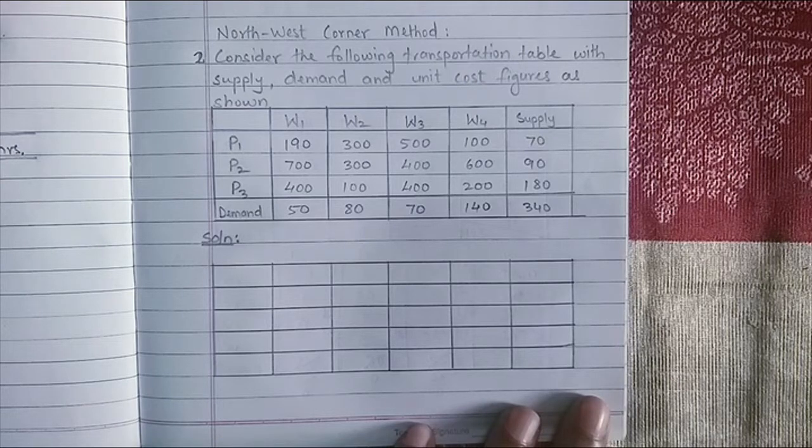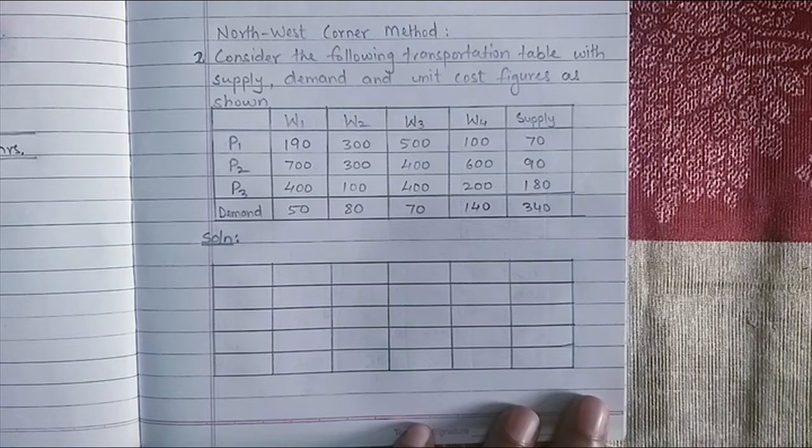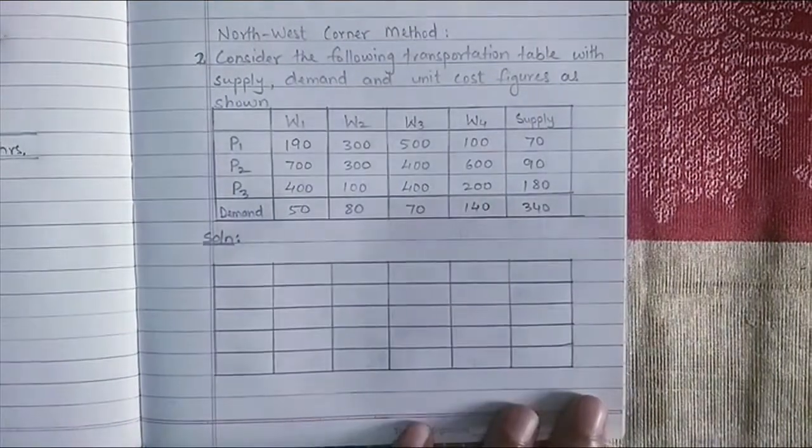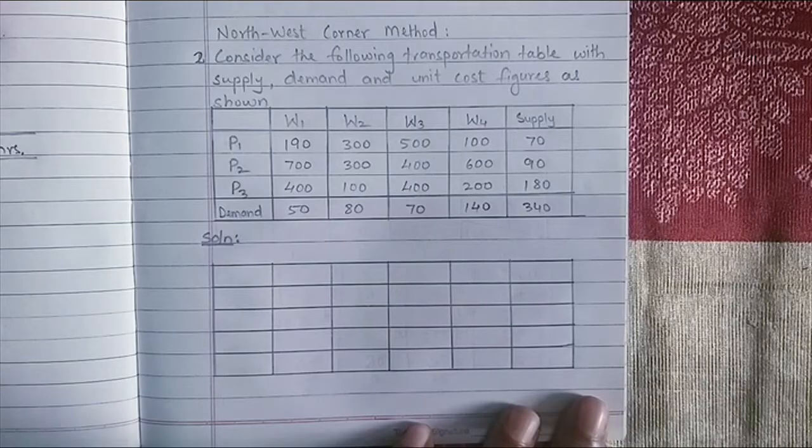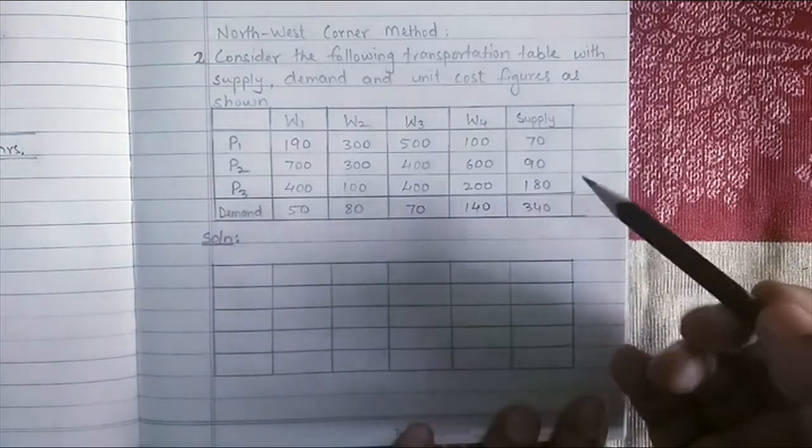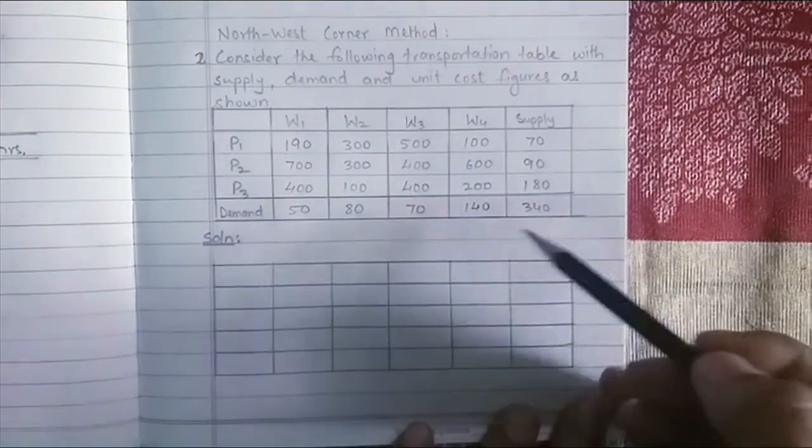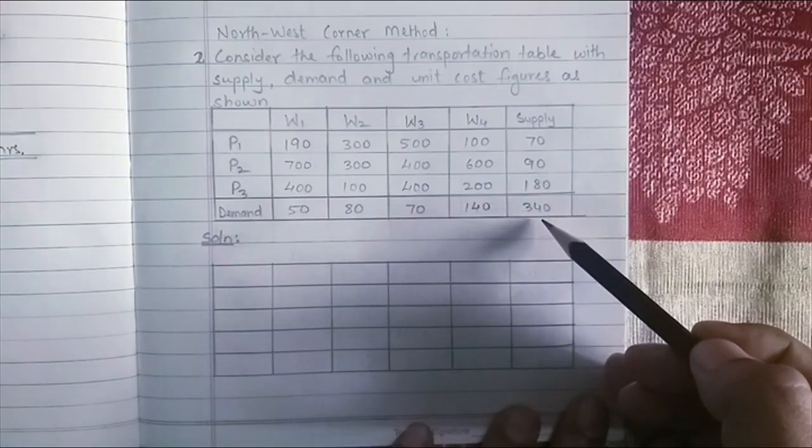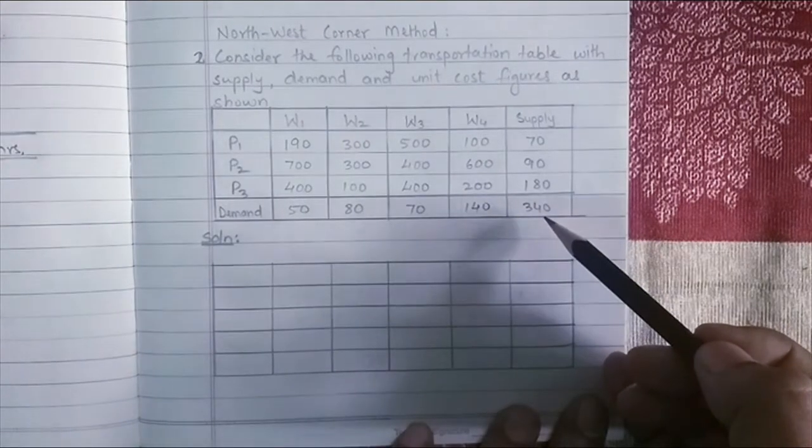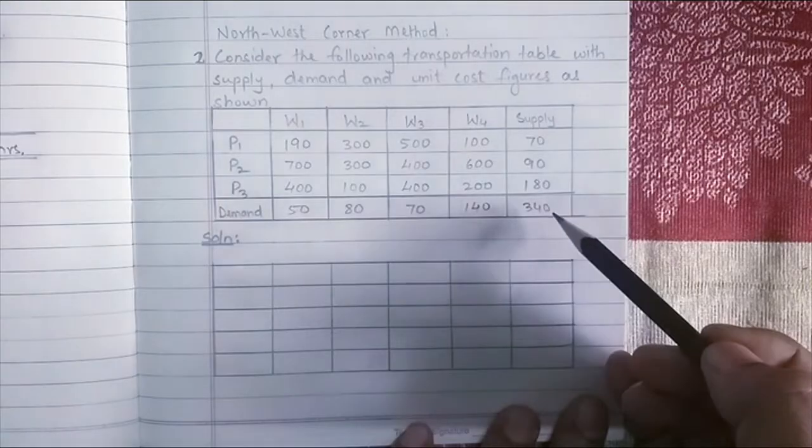Here we have an example. We are going to consider this transportation table where the supply, demand and unit cost are given to you. If you look at the total supply and the total demand is 340, that means it's a balanced problem.